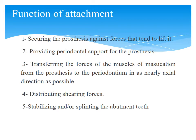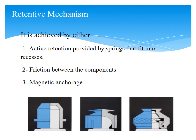The functions of attachments include securing the prosthesis against forces that tend to lift it, providing periodontal support for the prosthesis, transferring the forces of the muscles of mastication from the prosthesis to the periodontium in as nearly an axial direction as possible, distributing shearing forces, and stabilizing the abutment teeth. The retentive mechanism is achieved by either active retention provided by springs that fit into recesses, friction between components, or by magnetic anchorage.